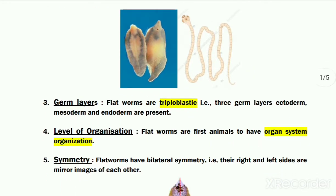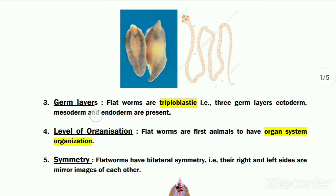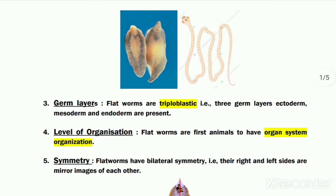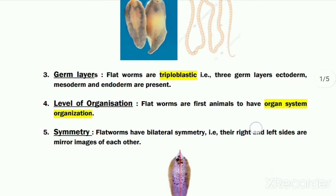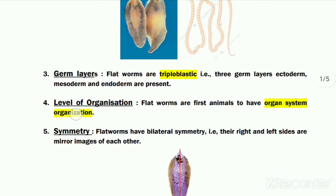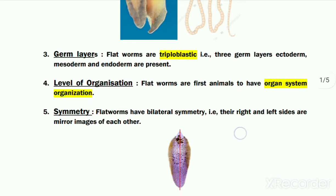The next feature is that flat worms are triploblastic organisms, meaning they have ectoderm, mesoderm, and endoderm — these three germ layers are present during their gastrula stage. Flat worms have organ system level of organization, as they have a well-defined reproductive system, nervous system, and excretory system.